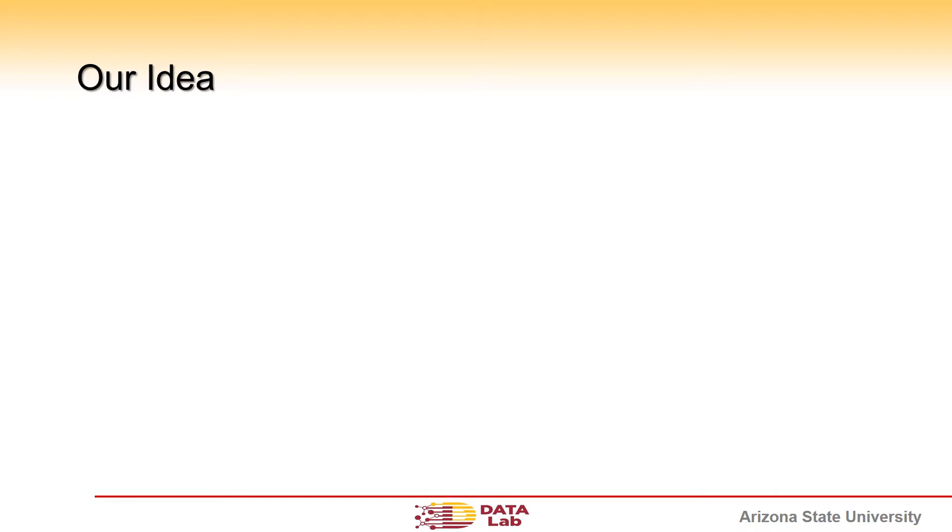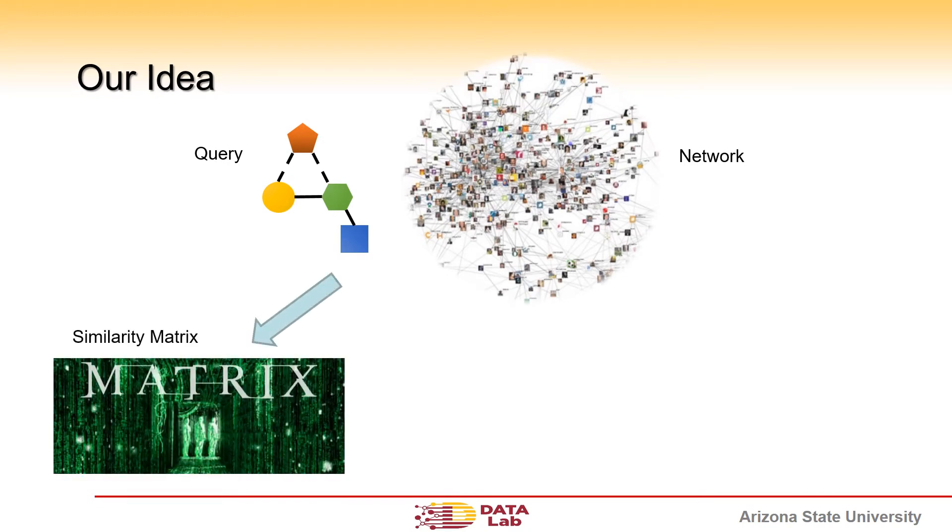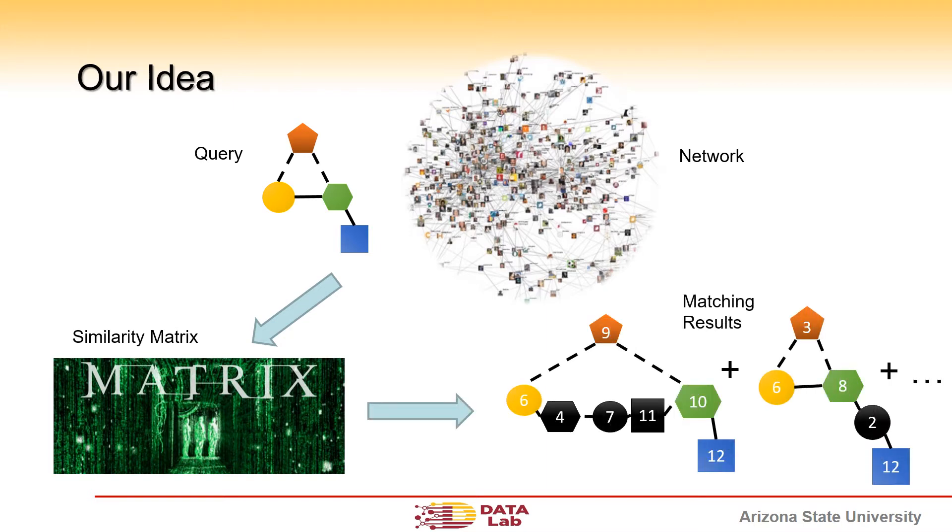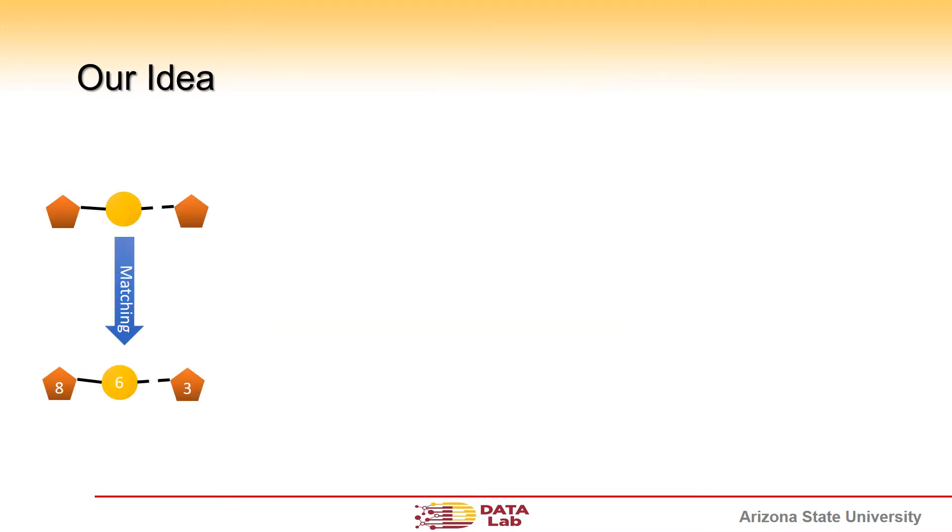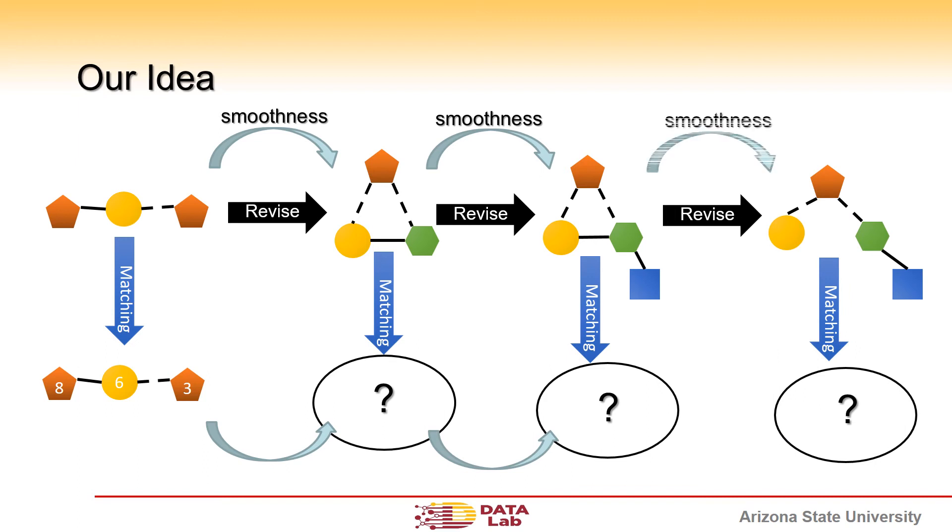Our idea is to recast a subgraph matching problem into calculating a node similarity matrix problem, and then generate matching subgraphs through similarity matrix. We study the smoothness between consecutive queries, and as a result, this can speed up the computation of similarity matrix.